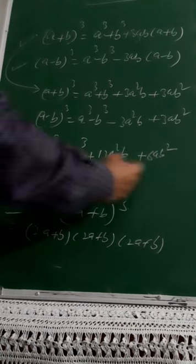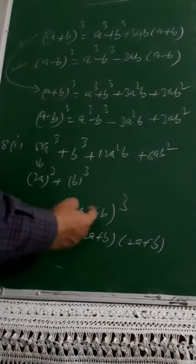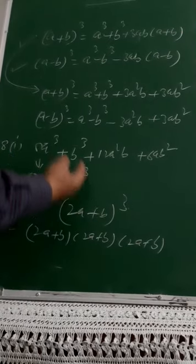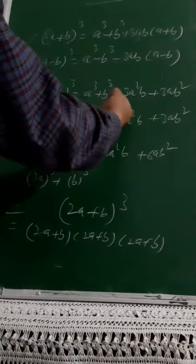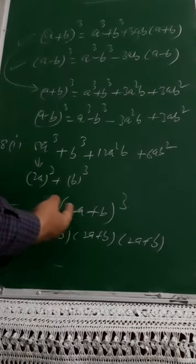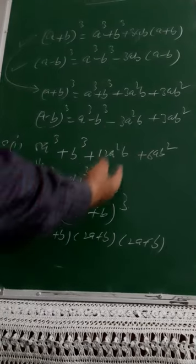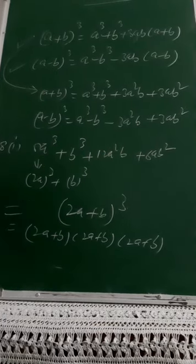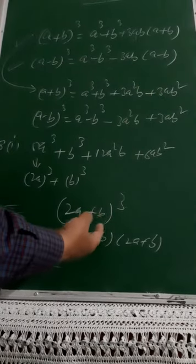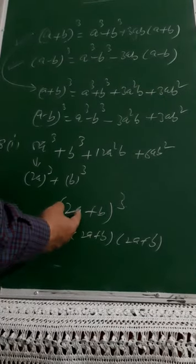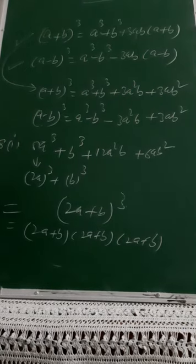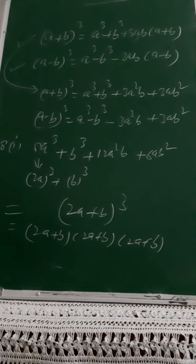If you expand (2a+b)³, you get: a³+b³+3a²b+3ab². Here 3a²b means 3×(2a)²×b = 3×4a²×b = 12a²b, and 3ab² means 3×(2a)×b² = 6ab². So the expansion perfectly matches the original expression. Very simple — you just identify a and b from the perfect cubes.